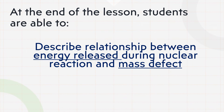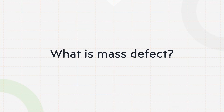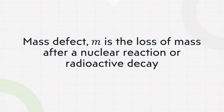At the end of this lesson, you as my student would be able to describe the relationship between the energy released during a nuclear reaction and mass defect. So the question is: what is mass defect? Mass defect m is the loss of mass after a nuclear reaction or radioactive decay. After a nuclear reaction there is bound to be a loss in mass.